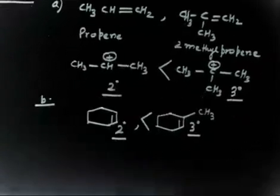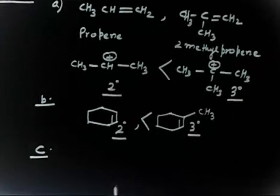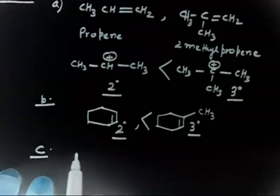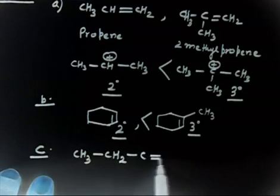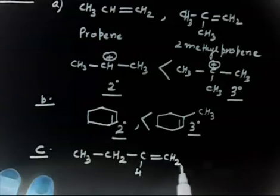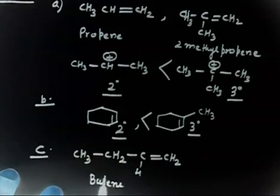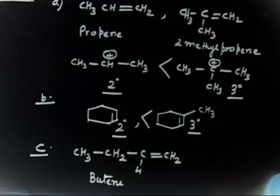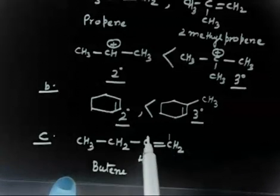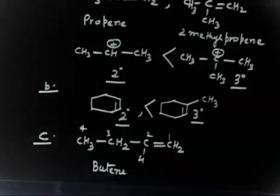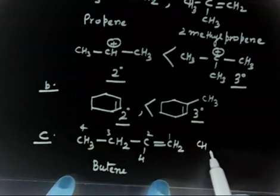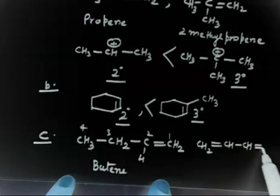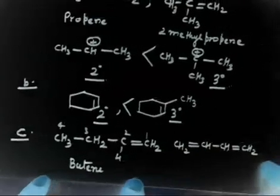Now let us discuss part C. We have 1-butene, written as CH3-CH2-CH=CH2 — if nothing else is specified, we assume it is 1-butene, with the double bond at carbon one. And the second compound is 1,3-butadiene: CH2=CH-CH=CH2. Which will be more reactive towards HBR?